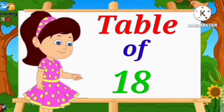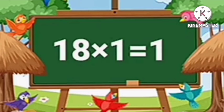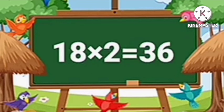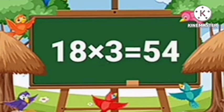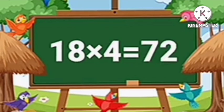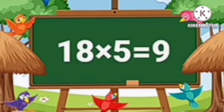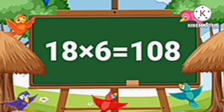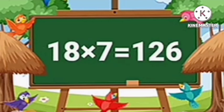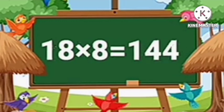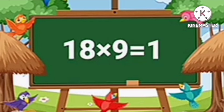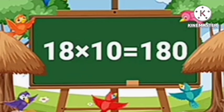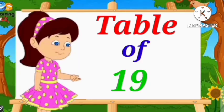Table of Eighteen. Eighteen ones are eighteen. Eighteen twos are thirty-six. Eighteen threes are fifty-four. Eighteen fours are seventy-two. Eighteen fives are ninety. Eighteen sixes are one hundred eight. Eighteen sevens are one hundred twenty-six. Eighteen eights are one hundred forty-four. Eighteen nines are one hundred sixty-two. Eighteen tens are one hundred eighty.